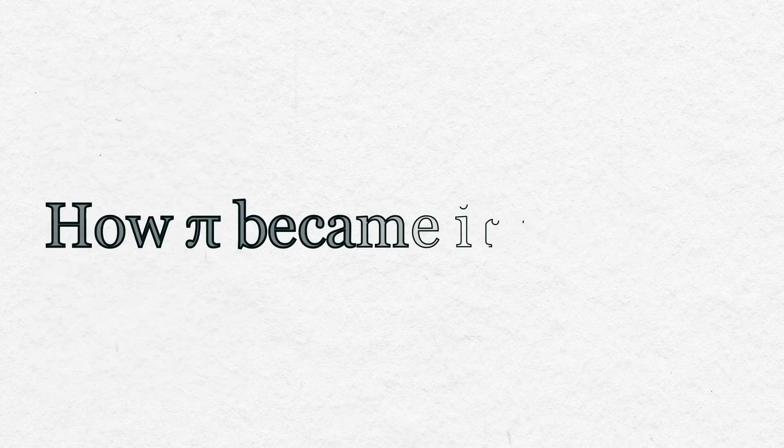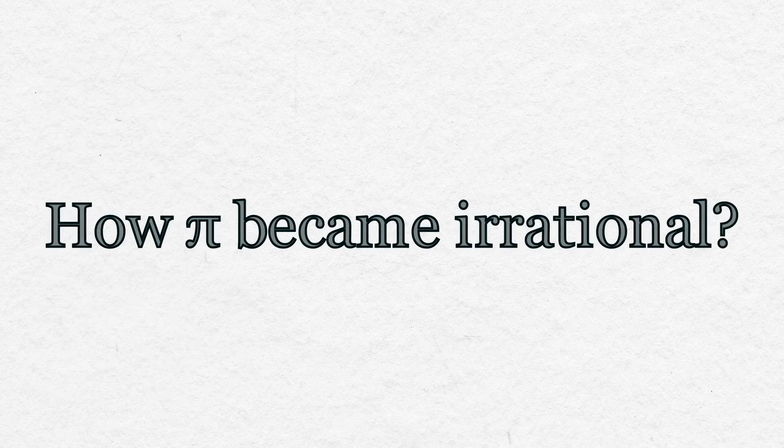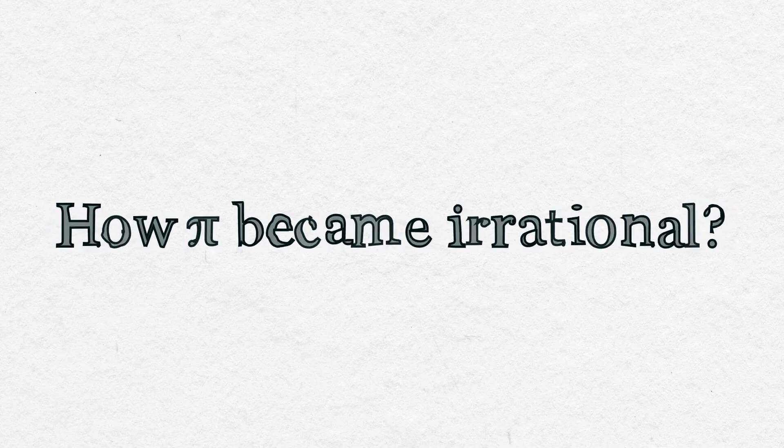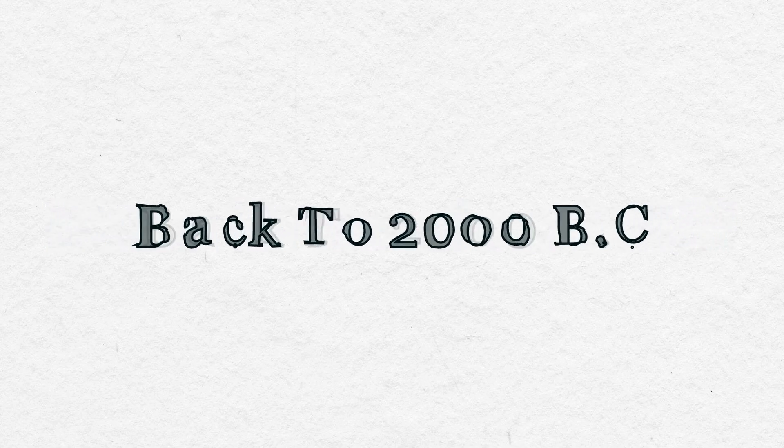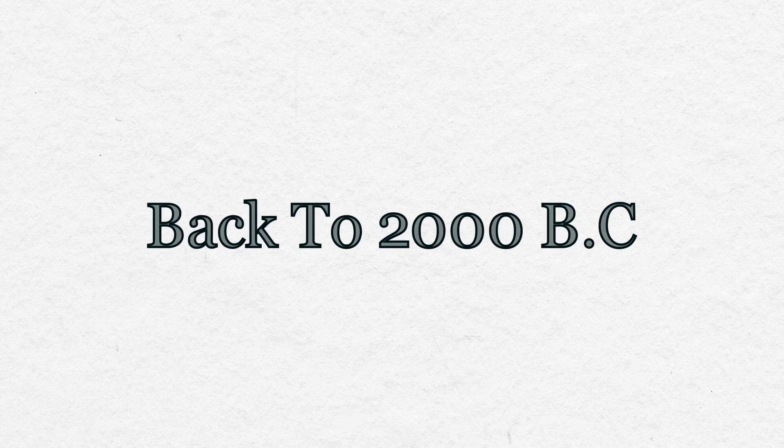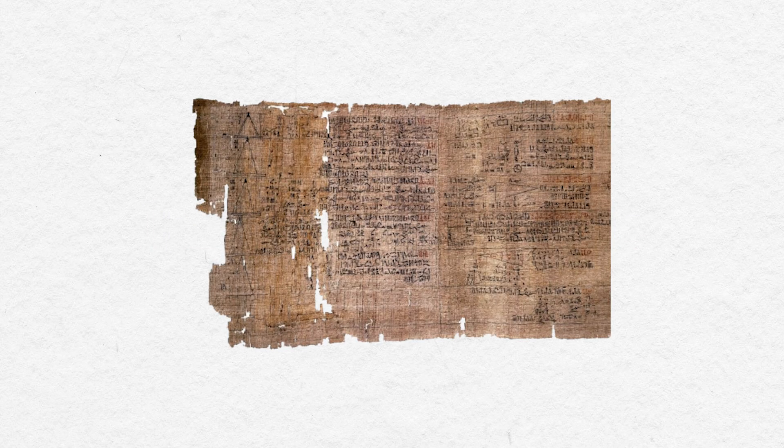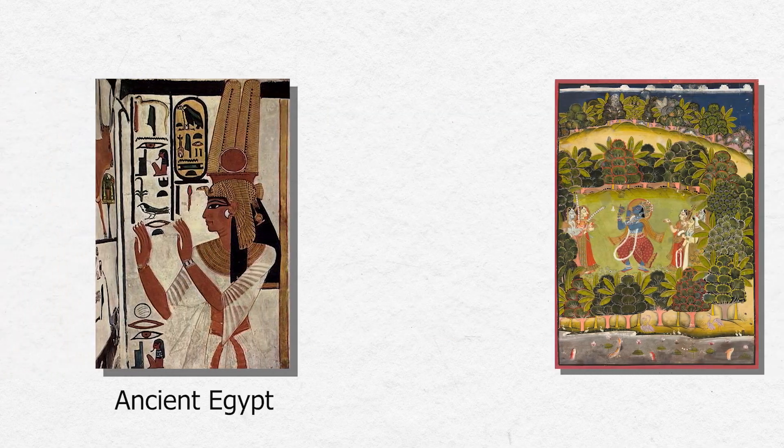So in order to know how pi became irrational, we have to go back in time, about 4,000 years back in time, when pi was only 3 and it wasn't even known by the Greek letter pi. The oldest documents referencing pi can be found across their cultures, from Egyptians to Indians.